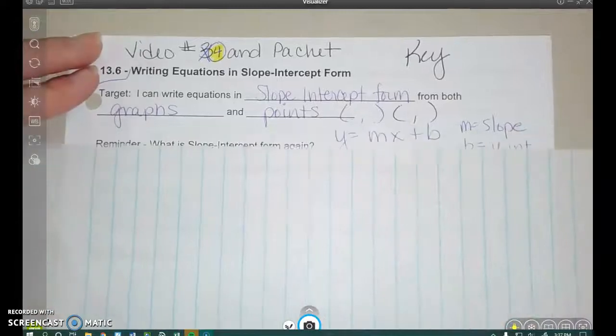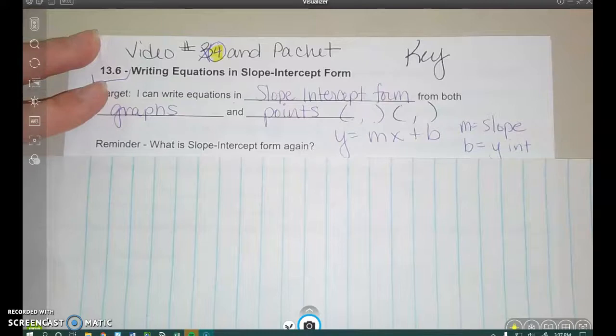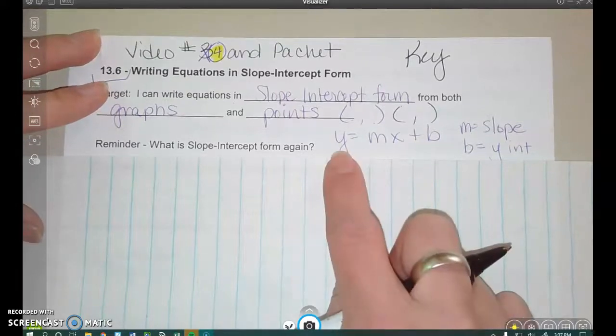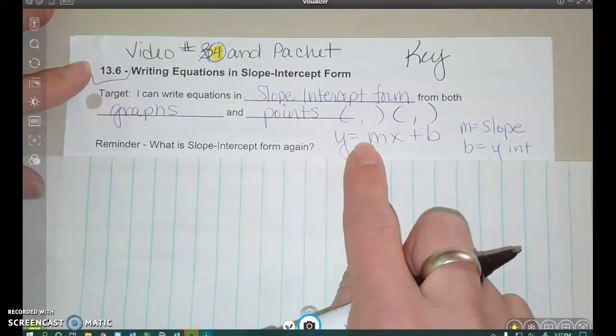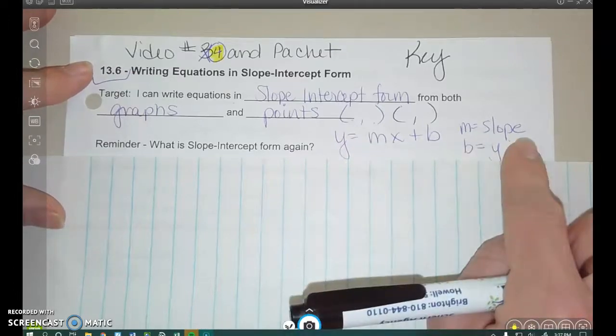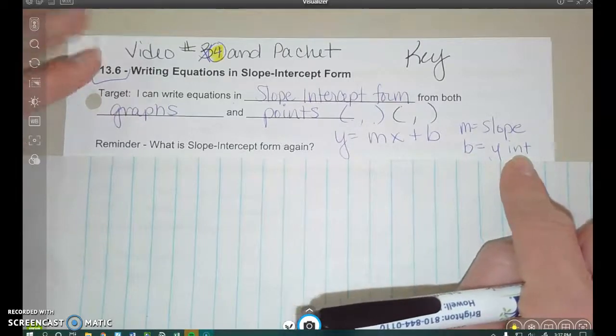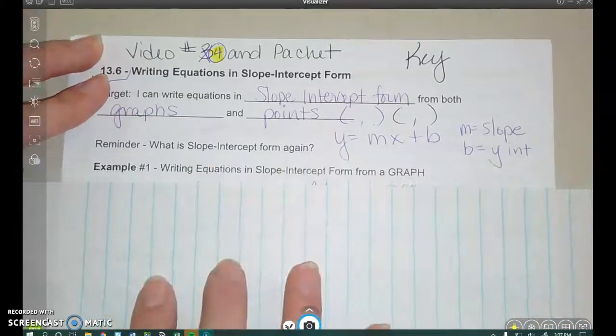Okay, so let's recap. Reminder, what is slope-intercept form again? Well, that's this equation or the form of writing an equation where we have y equals mx plus b, where m is the slope and b is that y-intercept or where it crosses the y-axis.